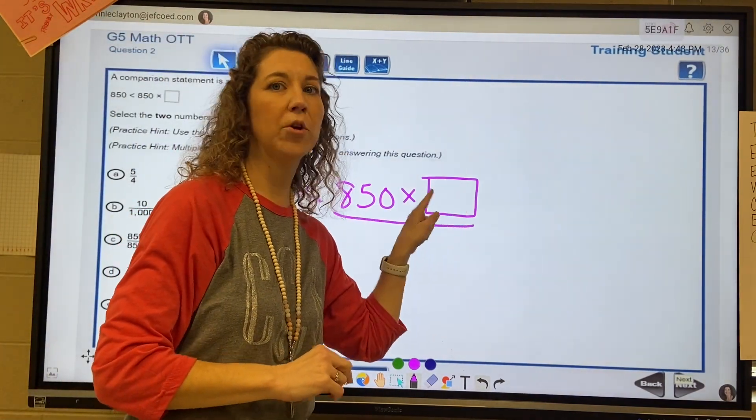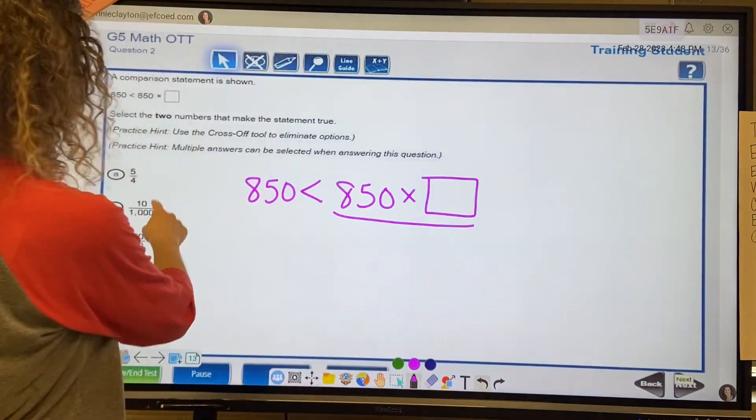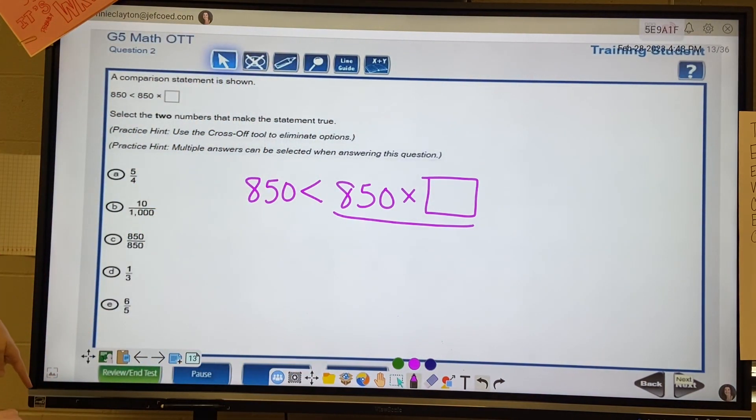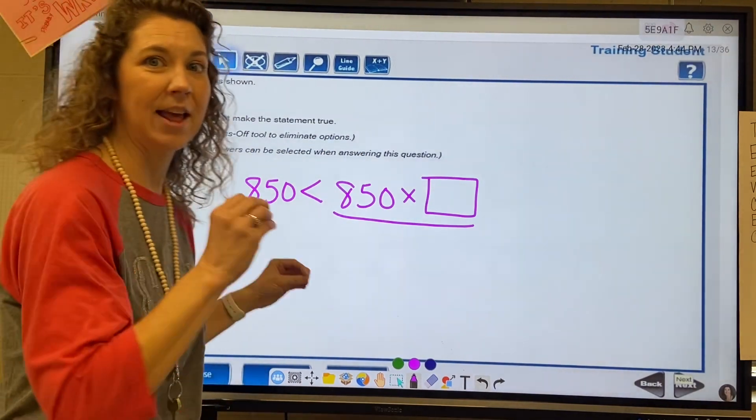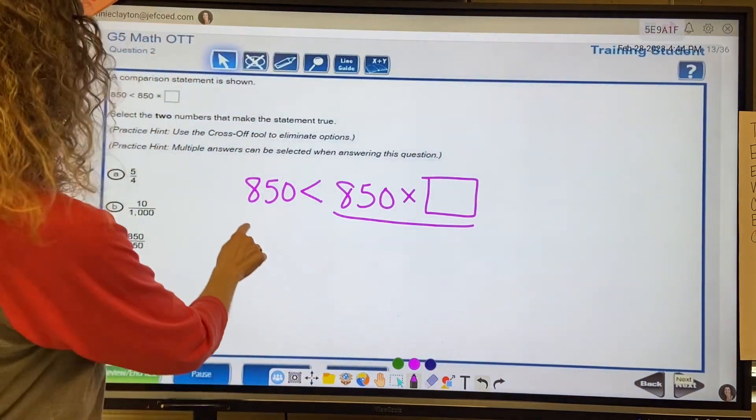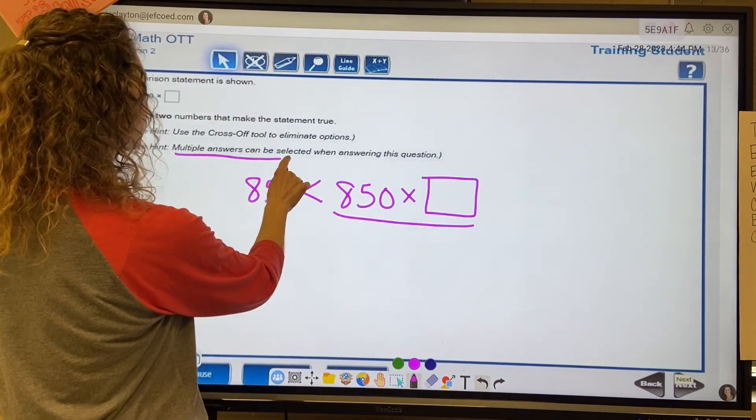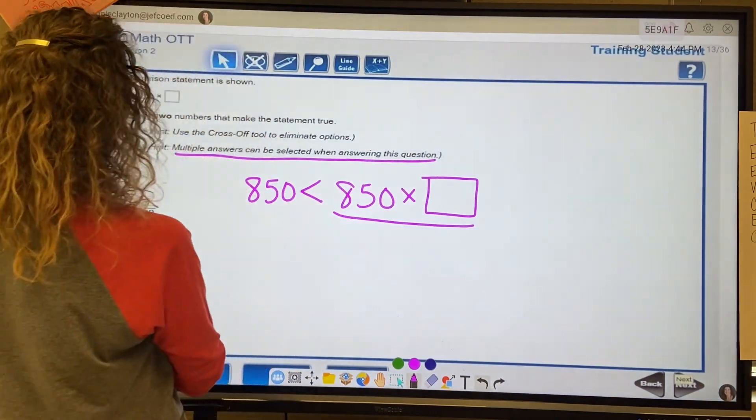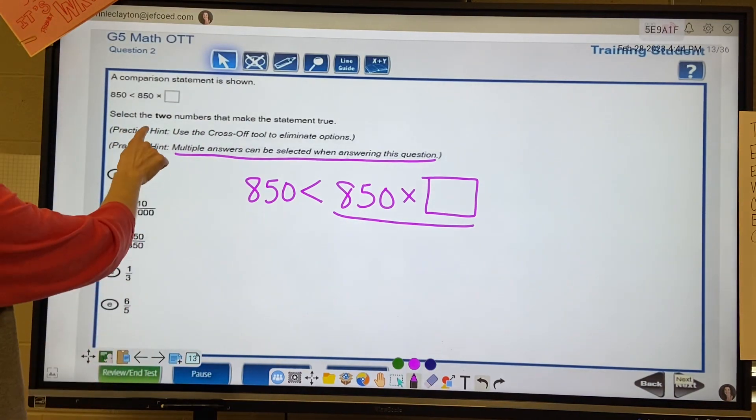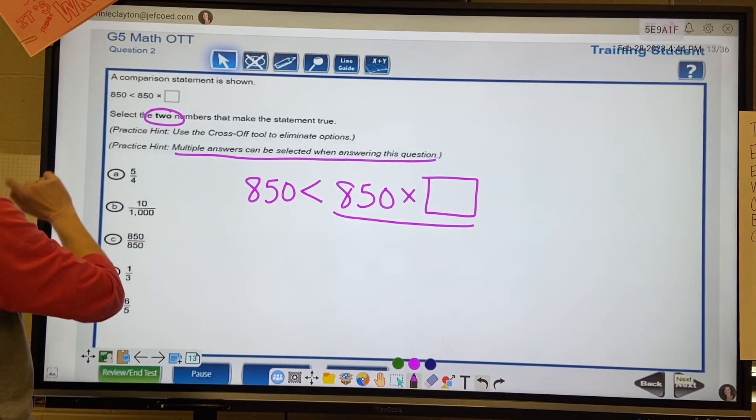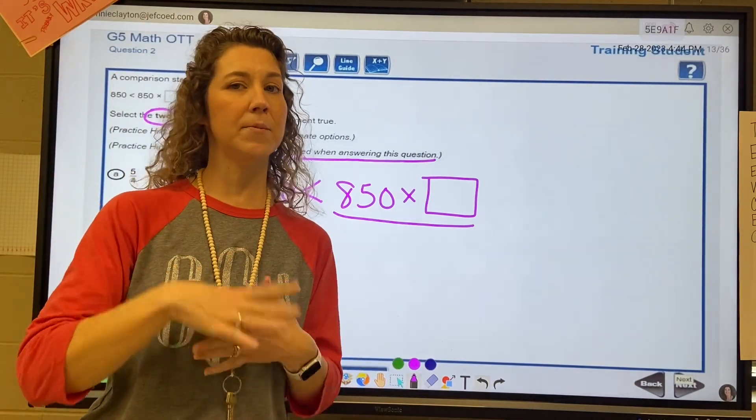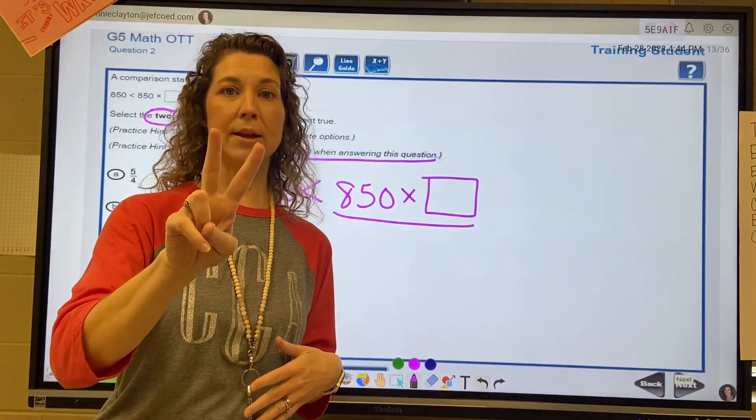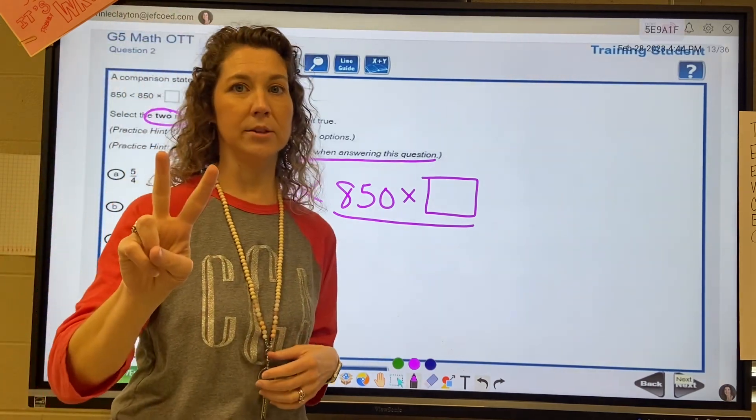So let's look at the answer choices. Oh look, it says multiple answers can be selected because I just glanced at it and realized that there's more than one answer. And it says it right here: multiple answers can be selected when answering this question. All right, and up here it says select two. We're looking for two answers. I'm looking for two answers that are greater than one.